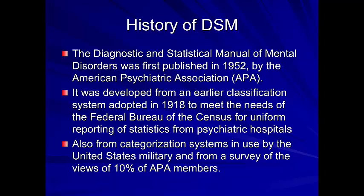It's published by the APA — the 'Big APA,' the American Psychiatric Association, as opposed to the American Psychological Association. So it's a medical book. It was developed from an earlier classification system in 1918, where the Federal Bureau of Census needed information on how to categorize people in mental hospitals. It was then refined by the American Psychiatric Association, also based on systems used in the military, and developed from a survey of about 10% of APA members. If you ever look at this first book, it's very interesting how much diagnosis has changed in such a short time — it makes you recognize how new our field really is.